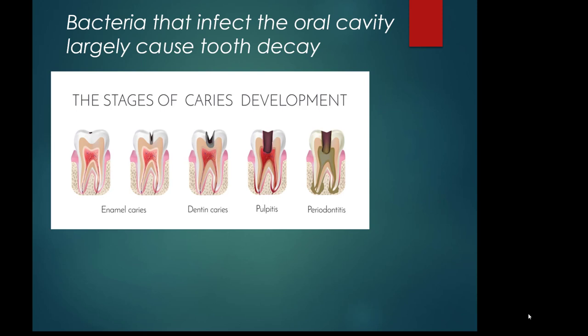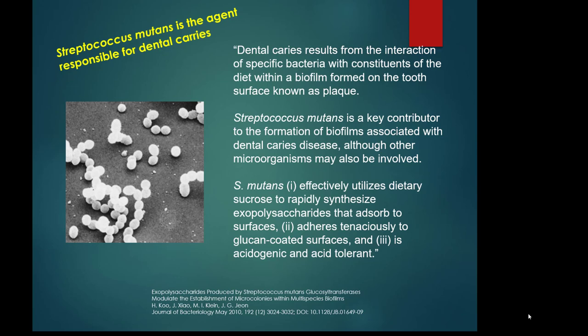Dental caries is actually caused by a community effort — multiple species all play a role in its formation. That said, there is one species whose participation is critical: Streptococcus mutans. Because Streptococcus mutans is considered a critical and necessary member of this community effort to cause decay, we can pin the causative agent tag on Streptococcus mutans. It is an alpha-hemolytic streptococcus.